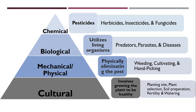Biological control is above mechanical for a reason — it involves actually introducing living organisms. A good example is ladybugs: you can buy them online or from a store and use them to reduce aphid populations. That's different from planting things to attract ladybugs — you're introducing the actual predator species into the environment. That's the difference between those two things.